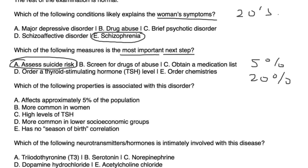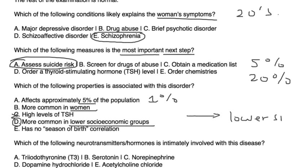Regarding associated features: schizophrenia affects about 1% of the population and is not more common in women — it tends to be relatively equal in men and women. It is more common in lower socioeconomic groups, which is correct. And finally, the neurotransmitter intimately involved in schizophrenia is dopamine — that would be choice D.